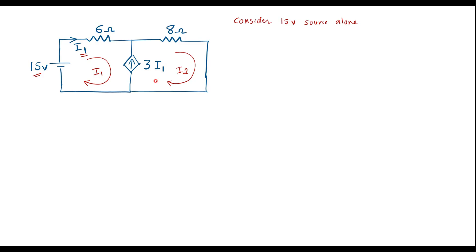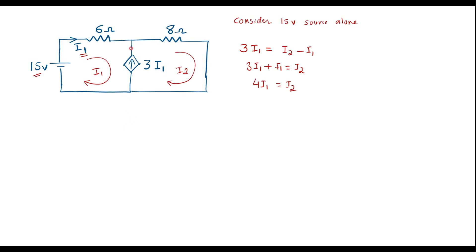I will solve this using loop analysis method. We can observe that there is a current source between two loops. If a current source is between two loops, we need to analyze it first. I can write 3I1 equals I2 minus I1, or 3I1 plus I1 equals I2, giving 4I1 equals I2. After analyzing the current source, we assume it is removed from the circuit, leaving only one single loop, known as the super loop.